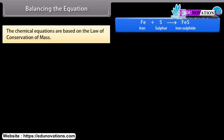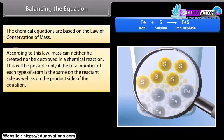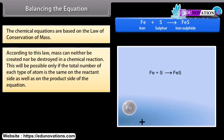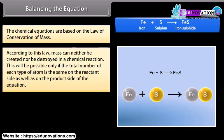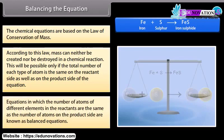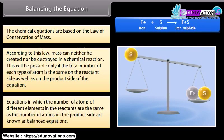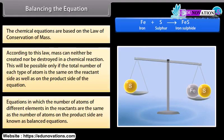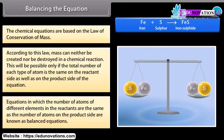Balancing the equation. The chemical equations are based on the law of conservation of mass. According to this law, mass can neither be created nor be destroyed in a chemical reaction. This will be possible only if the total number of each type of atom is the same on the reactant side as well as on the product side of the equation. Equations in which the number of atoms of different elements in the reactants are the same as the number of atoms on the product side are known as balanced equations.